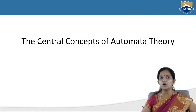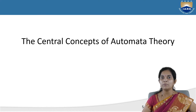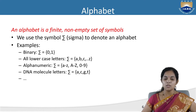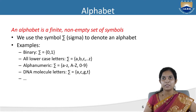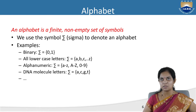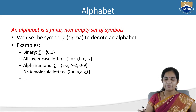What are the central concepts of automata theory? The main basic components needed for this mathematical model are called central concepts. The first one is the alphabet — an alphabet is a finite, non-empty set of symbols. We use the symbol sigma (Σ) to denote an alphabet.